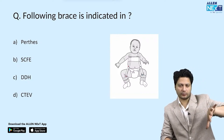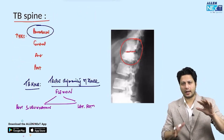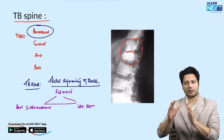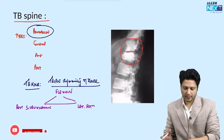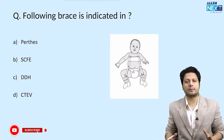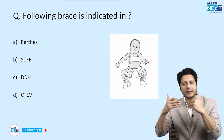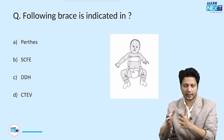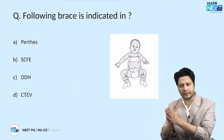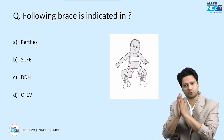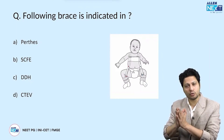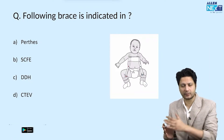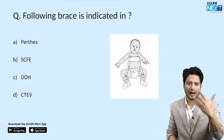That was one segment of the question solved — that was about tuberculosis. The second segment is the identification of braces: the common braces and splints which are used in orthopedic practice.